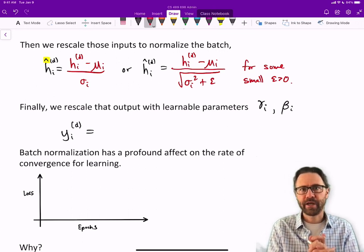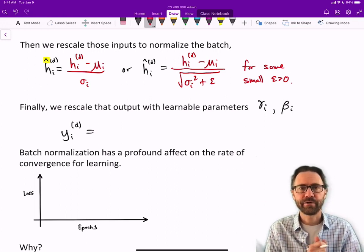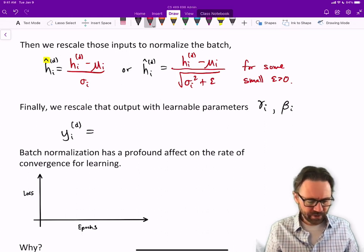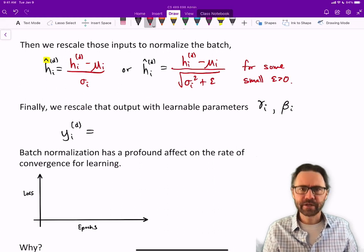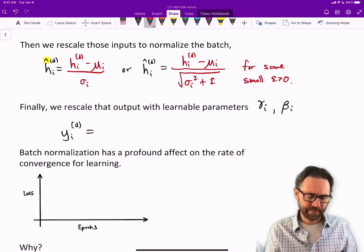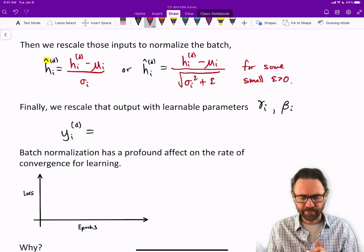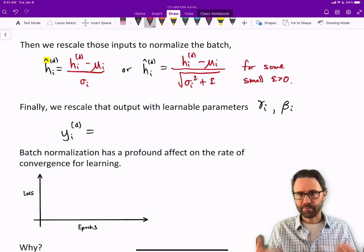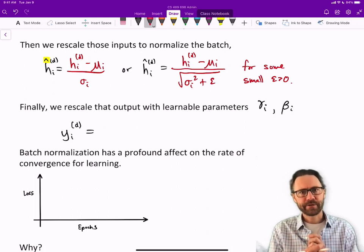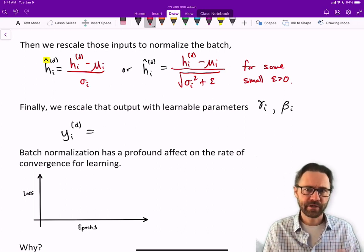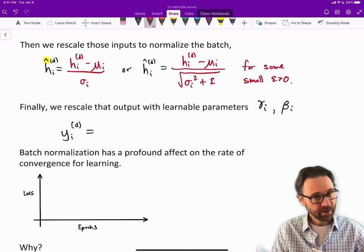We use those rescaled or normalized activities to project to the next layer. The next layer is getting a rescaled version of those inputs. But we can go one step further and take those rescaled normalized outputs and run them through one more rescaling—actually it's un-normalization. We can rescale that output with learnable parameters γi and βi. So each node will normalize its output but then apply this learned rescaling. The output of node i, which I'm calling y—